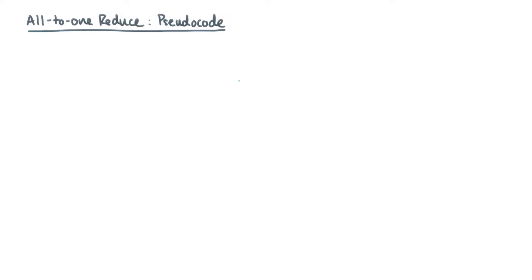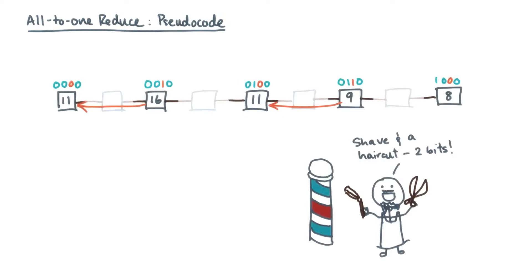If you understand the SPMD model and the asynchronous communication primitives, then you're ready to write the pseudocode for an all-to-one reduction. So recall the problem and our algorithmic idea.